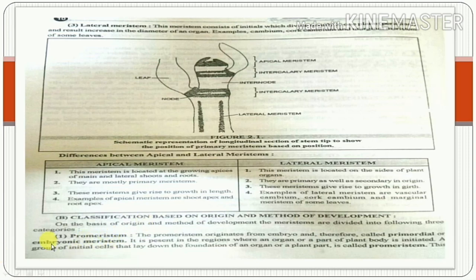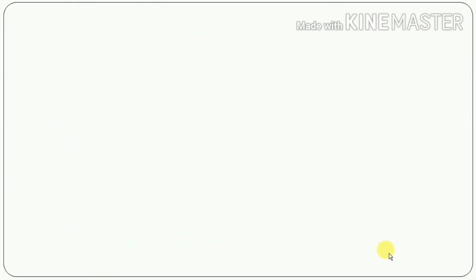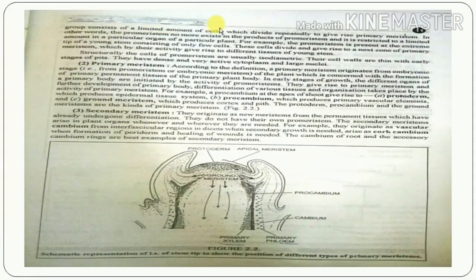First, we will discuss pro-meristem. Pro-meristem is also known as primordial or embryonic meristem. It is present in the areas where an organ or a part of the plant body is initiated. A group of initial cells that lay down the foundation of an organ or a plant part is called pro-meristem. This group consists of a limited number of cells which divide to give rise to primary meristem, meaning pro-meristem no longer exists in its products.